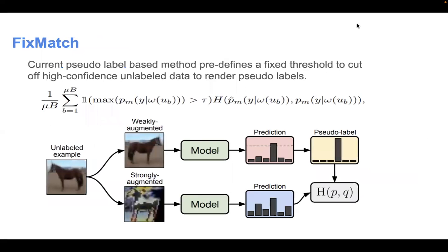FixMatch is a commonly-used semi-supervised learning method. It has two models: the teacher model utilizes weakly-augmented images as input to teach the student model, which utilizes strongly-augmented images as input.